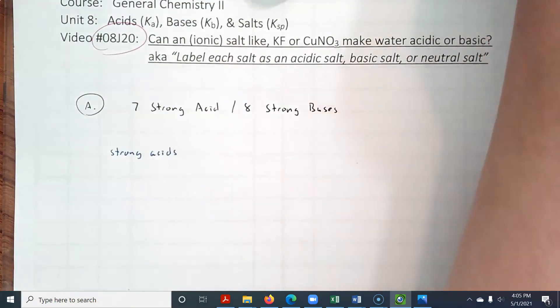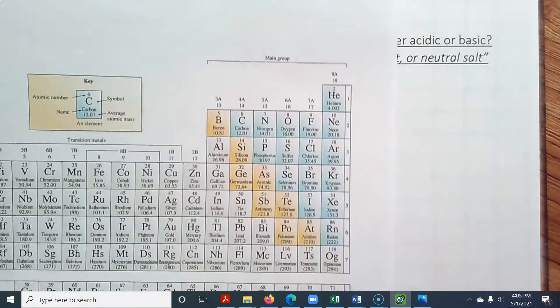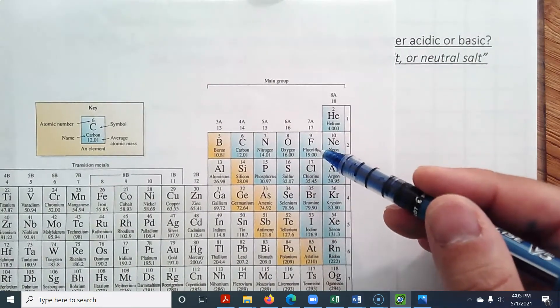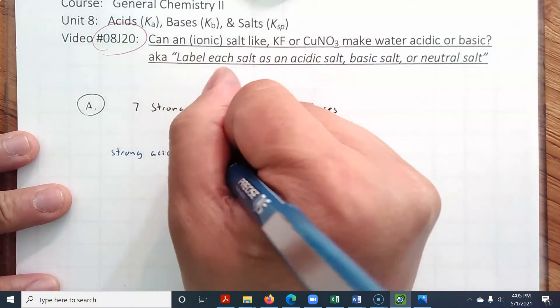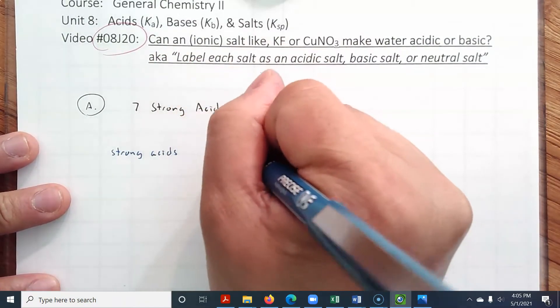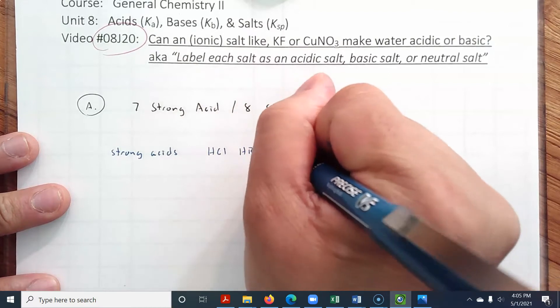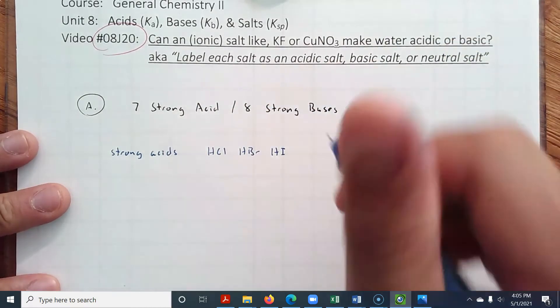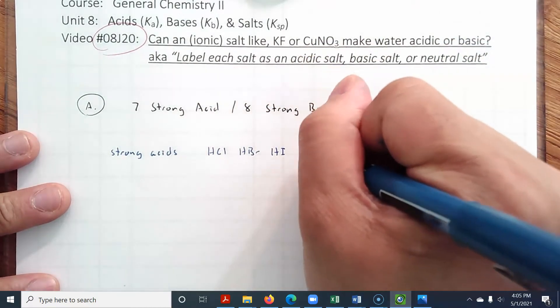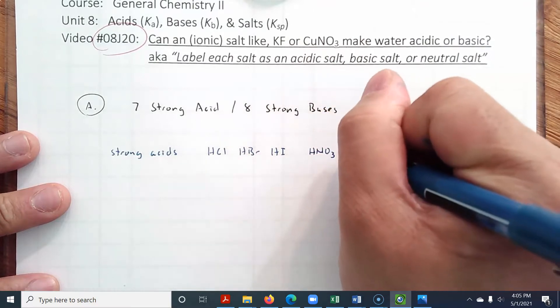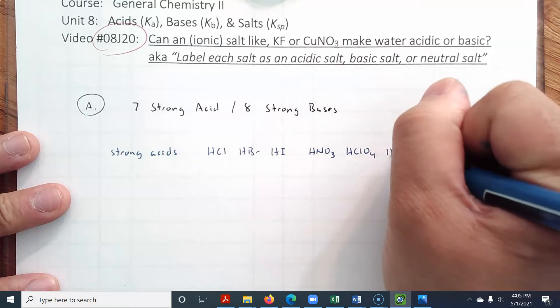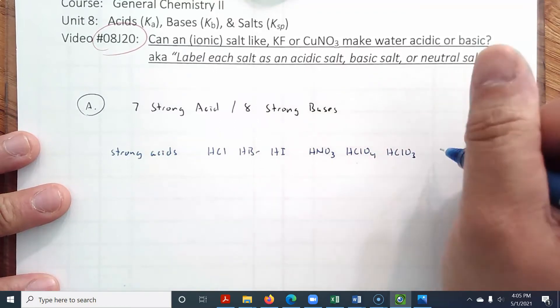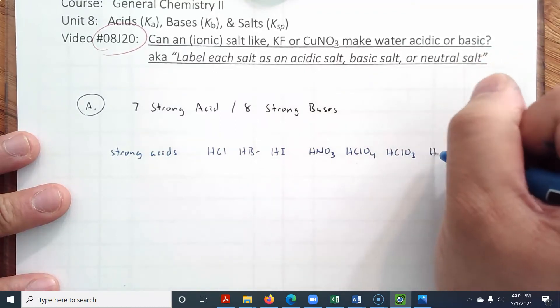We can use the periodic table for a little bit of help. We have the hydrogen halides, but not HF, but HCl, HBr, HI. The other four are nitric acid HNO3, perchloric acid HClO4, chloric acid HClO3, sulfuric acid H2SO4.